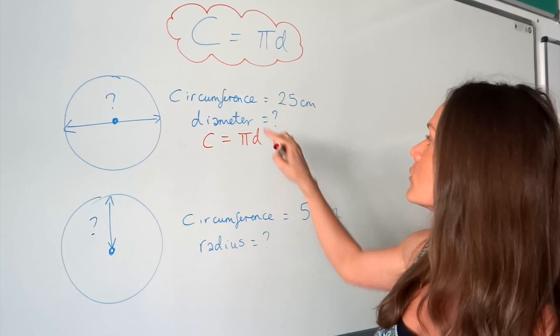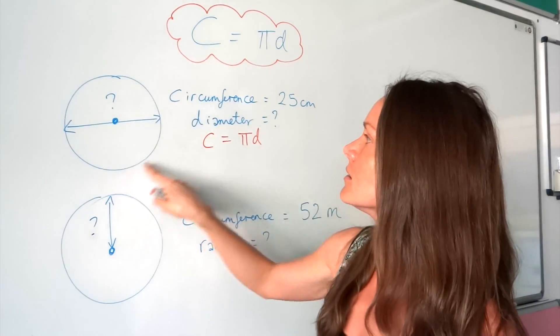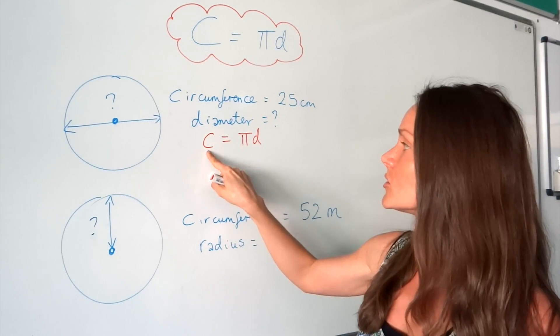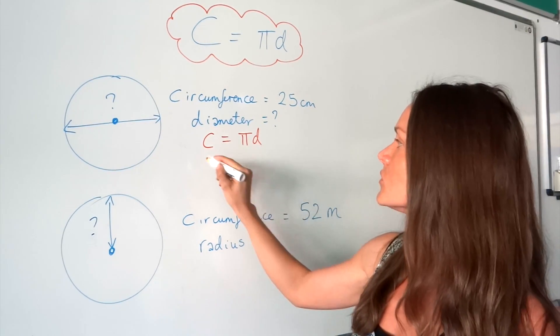In the first one we know that the circumference, this distance here, is 25 centimeters. So I'm going to change C, which is the circumference, to 25.